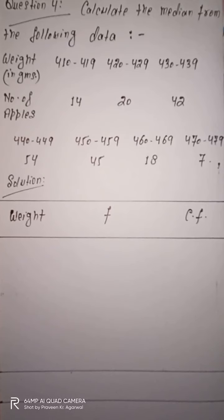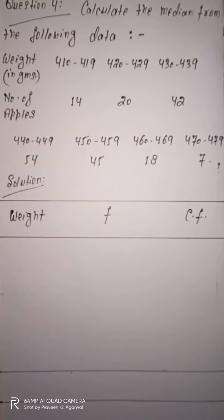In the inclusive class interval, from 410 to 419, the difference is 9. The next class starts at 420, so there is a gap of 1 between 419 and 420. We divide this gap of 1 by 2, which gives 0.5. We subtract 0.5 from the lower limit and add 0.5 to the upper limit to convert inclusive to exclusive class intervals.